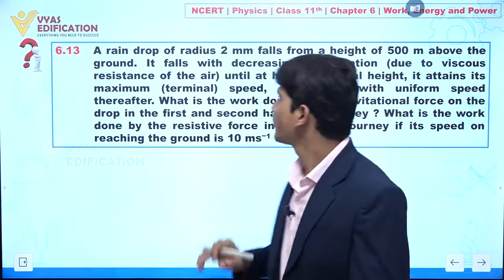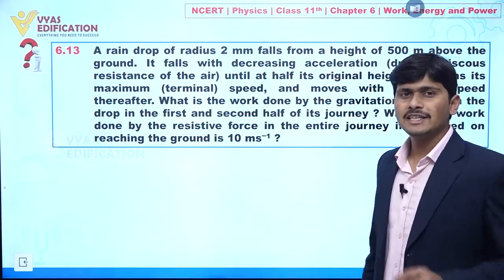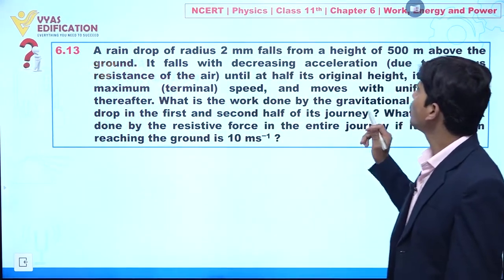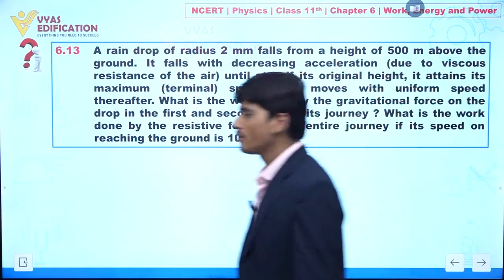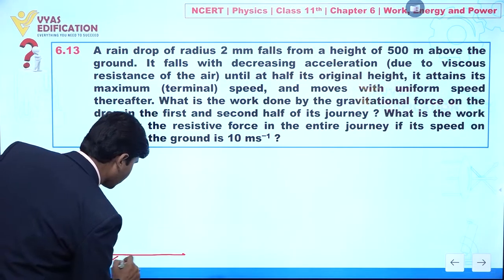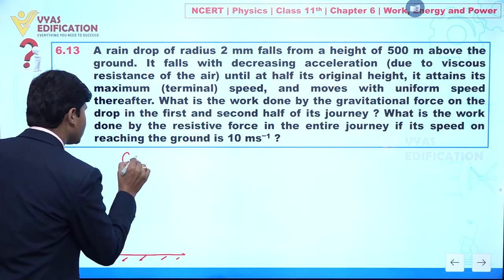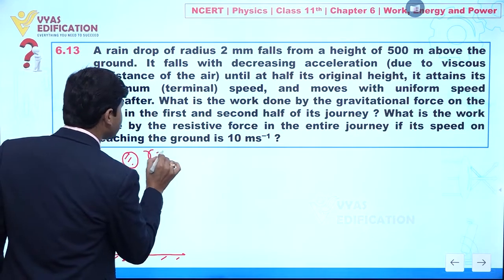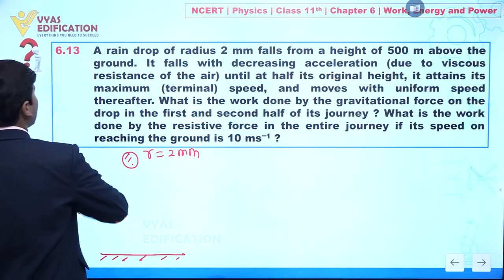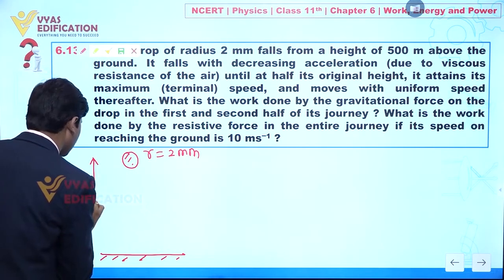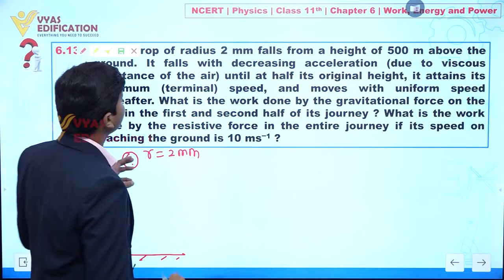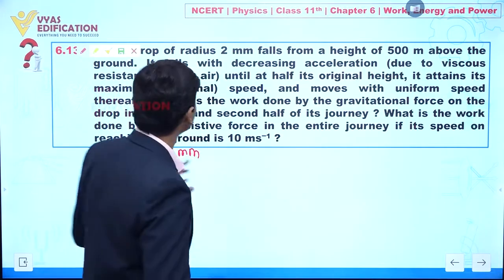We are going to discuss question number 6.13. In this question, a raindrop of radius 2 mm falls from a height of 500 meters above the ground. It falls with decreasing acceleration due to viscous resistance of the air.